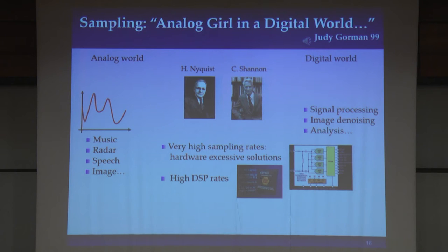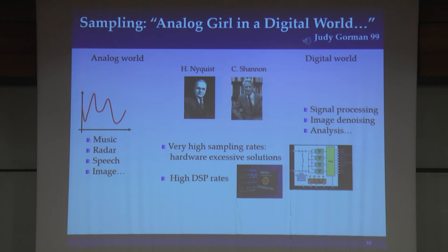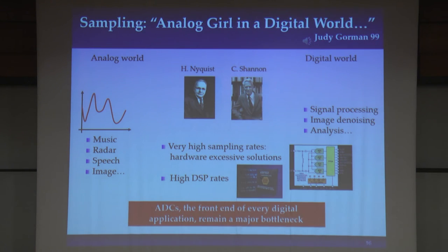The first drawback is that today we try to accommodate wider and wider signals, which means we have to sample at higher and higher rates. Sampling at high rates means very excessive hardware solutions — hard to develop, consumes a lot of power and space. The other limitation is that even if we manage to sample at these very high rates, we end up with a massive amount of digital data to store, process, and transmit, making the ADC a major bottleneck.